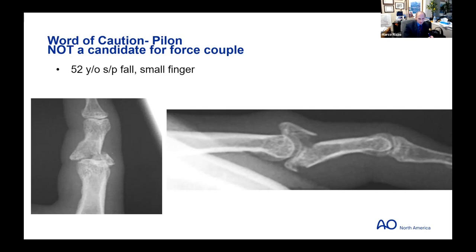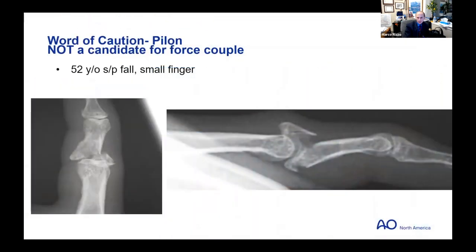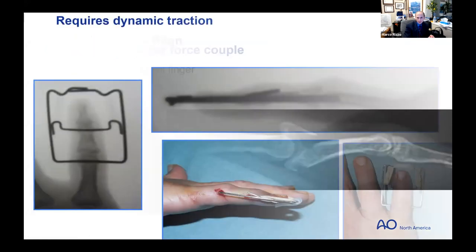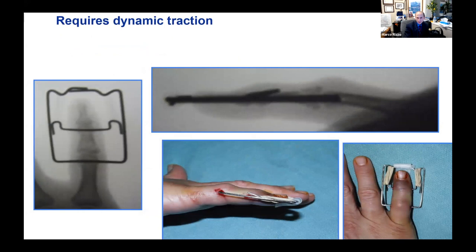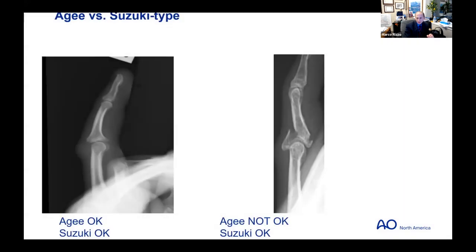One last point before transitioning to Dr. Capo: the difference between a pilon and a volar plate or dorsal fracture dislocation. A pilon has both the dorsal and volar cortices disrupted — it is not a candidate for a force couple device. You have to use a dynamic traction device, whether it be the Suzuki or the Slade type. You can do a Suzuki for a dorsal dislocation with an intact dorsal cortex, but for a pilon, the Agee device will not be a good choice.